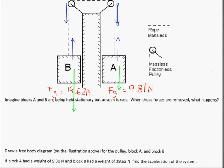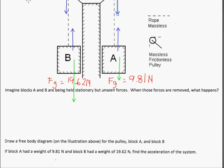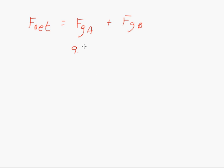Let's do real quick calculations, guys, because it says if block A had a weight of 9.81 and block B had a weight of 19.62, find the acceleration of the system. So the thing you have to realize is that all your tensions cancel out. So you're left with F_net equals F_gA plus F_gB. And then realizing that A is 9.81 newtons and then B is going to be 19.62 newtons. That's going to equal your F_net.